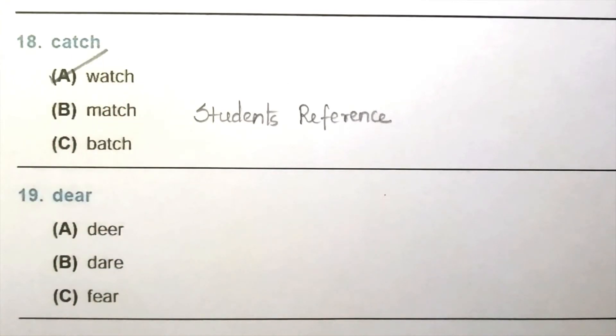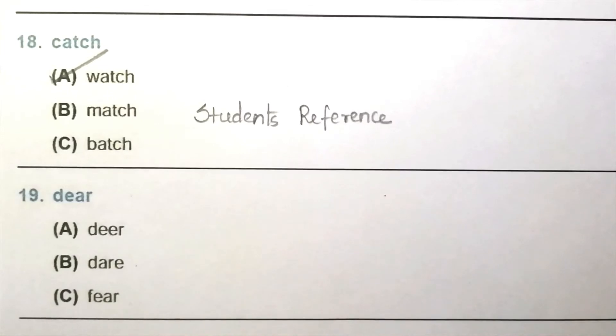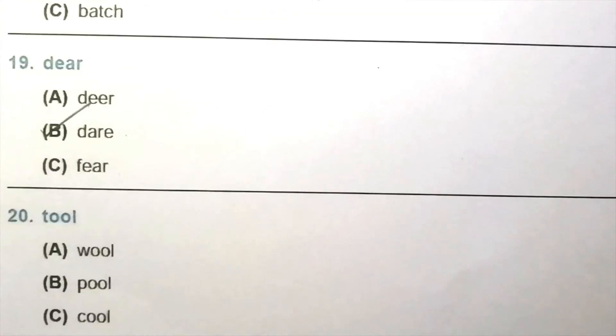Question 19: Deer, dare, dare, fear. The answer is B, dare. Question 20: Toll, will, pull, cool. The answer is A, will.